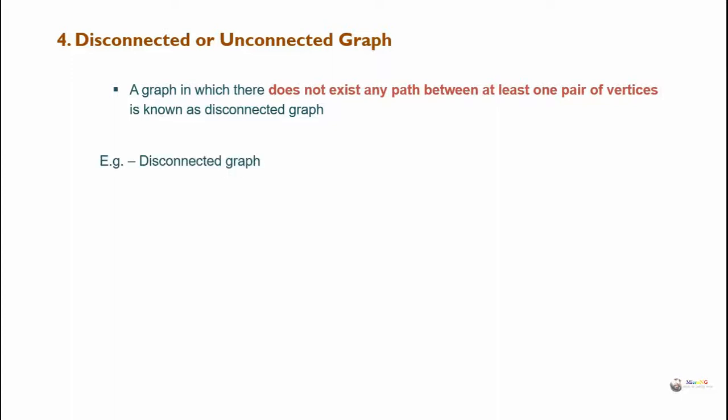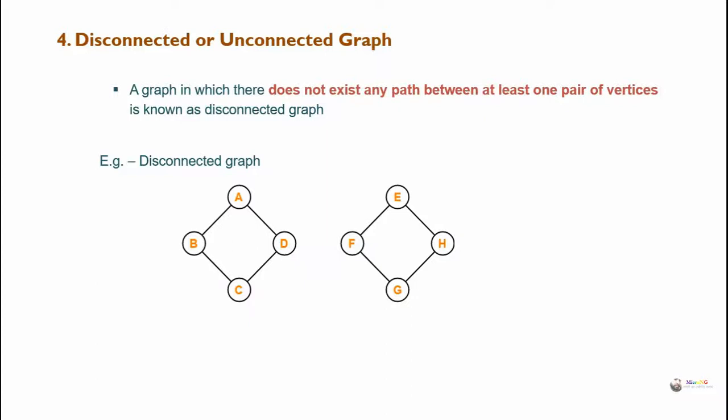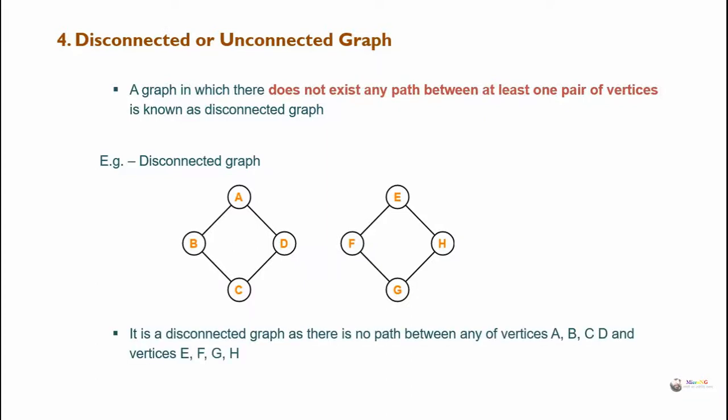Example for disconnected graph: it is a disconnected graph as there is no path between any of vertices A, B, C, D and vertices E, F, G, H.